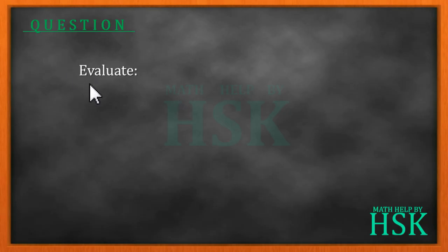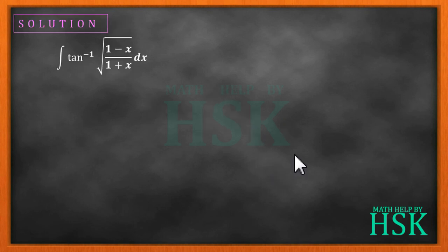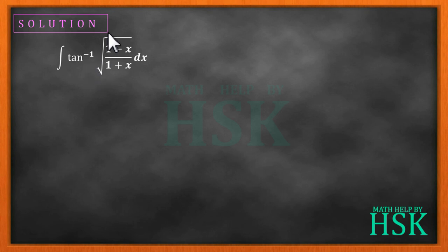Hello friends. The question is: we have to evaluate this integral — tan inverse of square root of (1 minus x) upon (1 plus x) with respect to x. We have been given an inverse trigonometrical function with the term in the form of (1 minus x) upon (1 plus x) inside the square root sign.